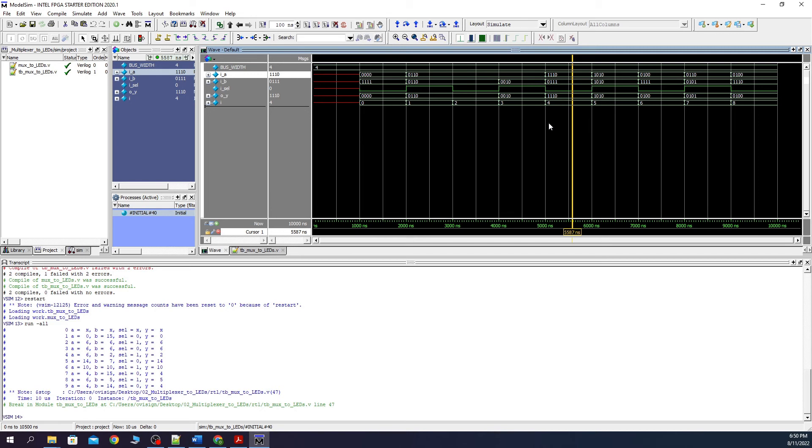So let's analyze now what our test bench does. You can see how sel toggles at each microsecond. When it is 0, y should get the value of a. Or when it is 1, y should get the value of b. So here you can see that y is 0.